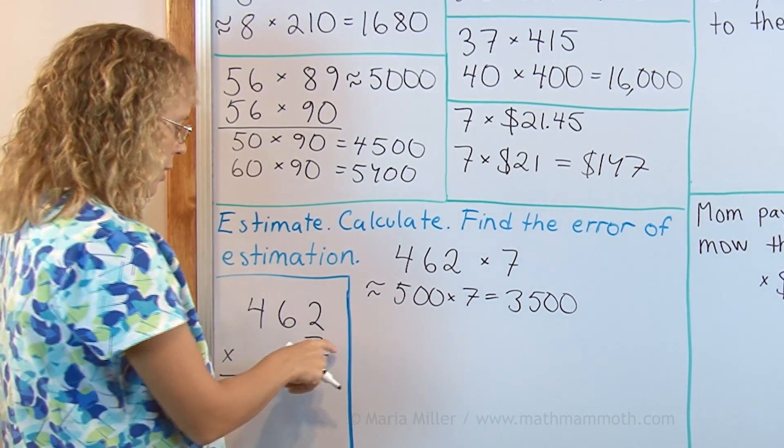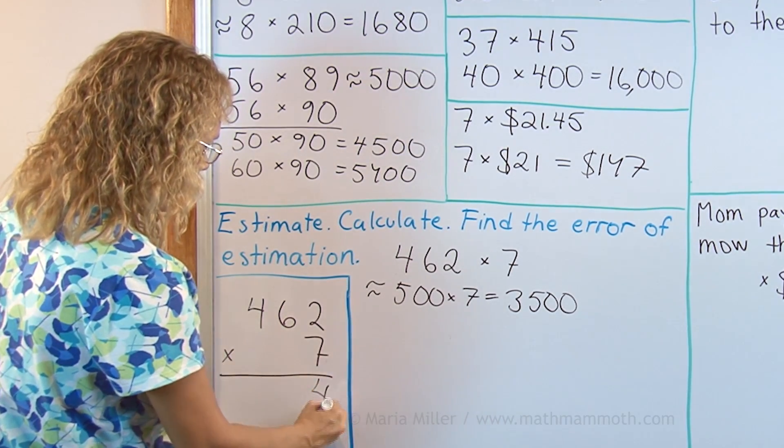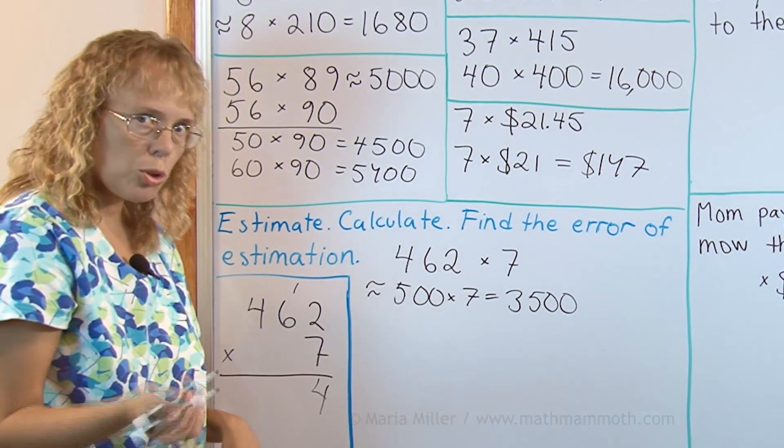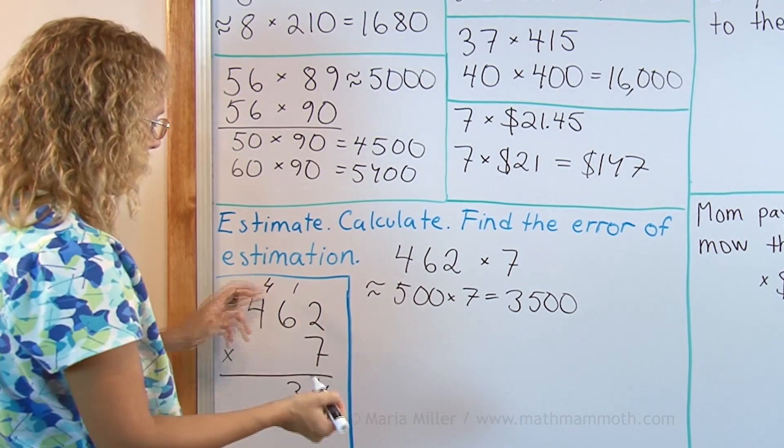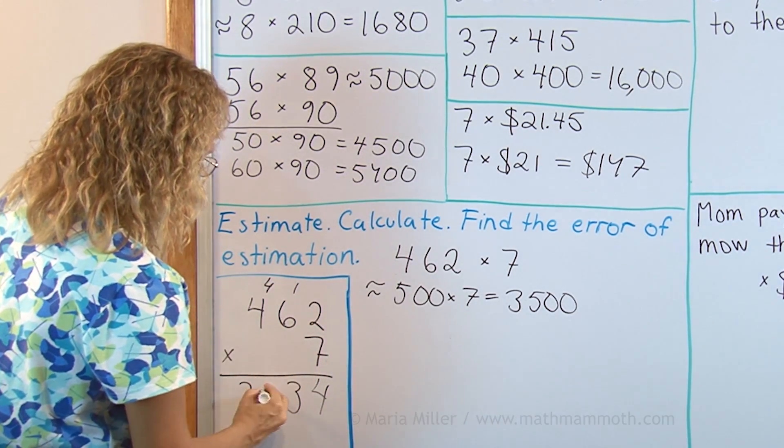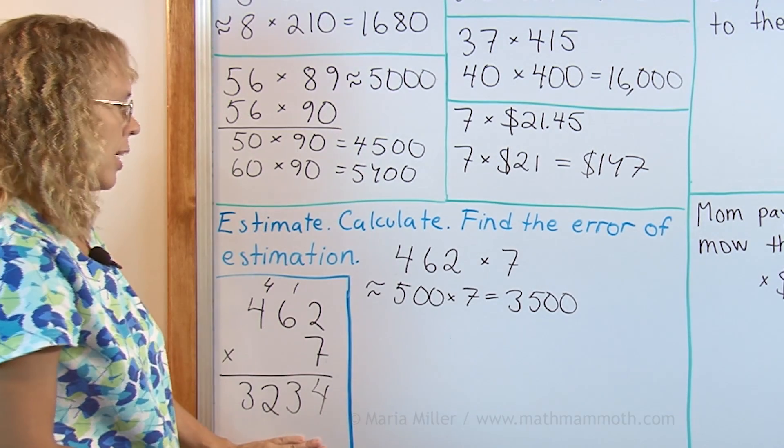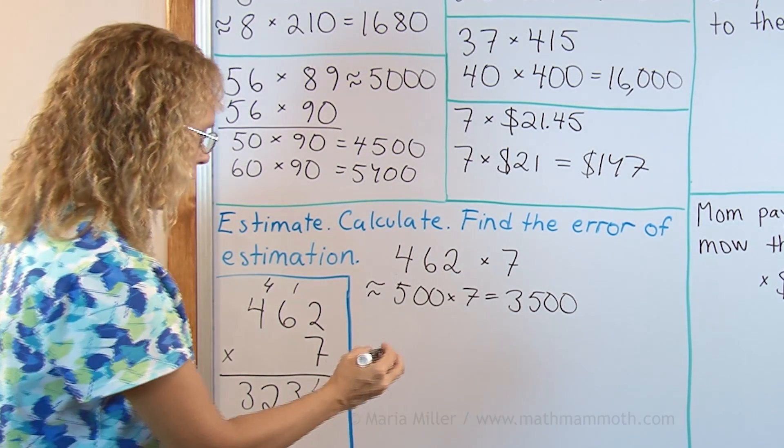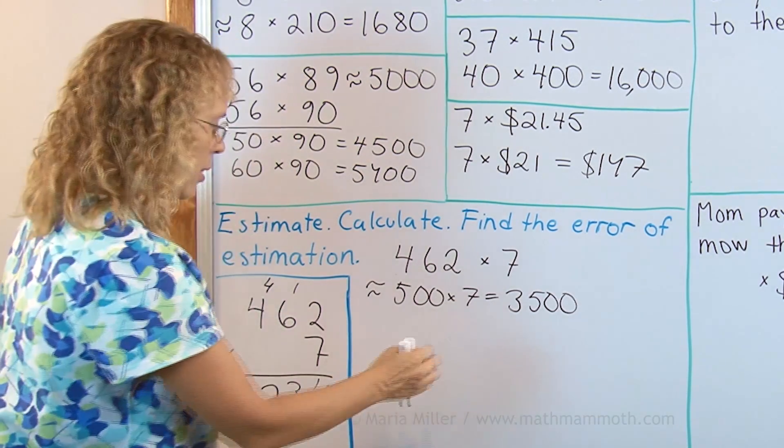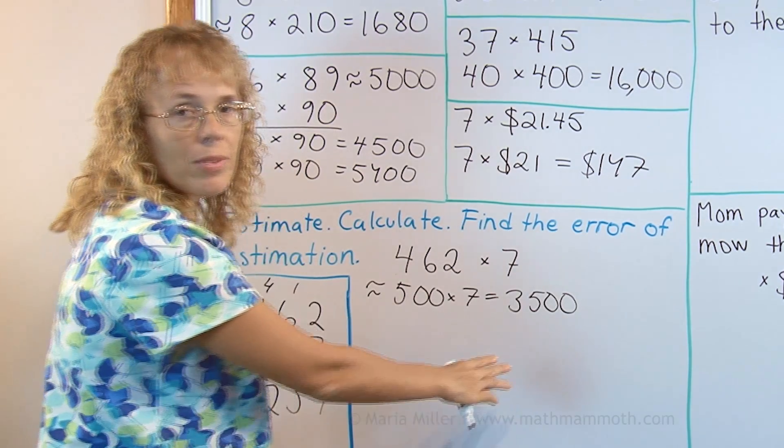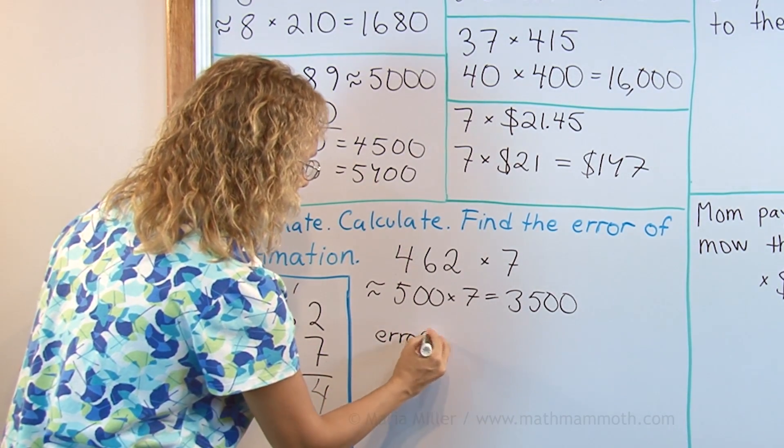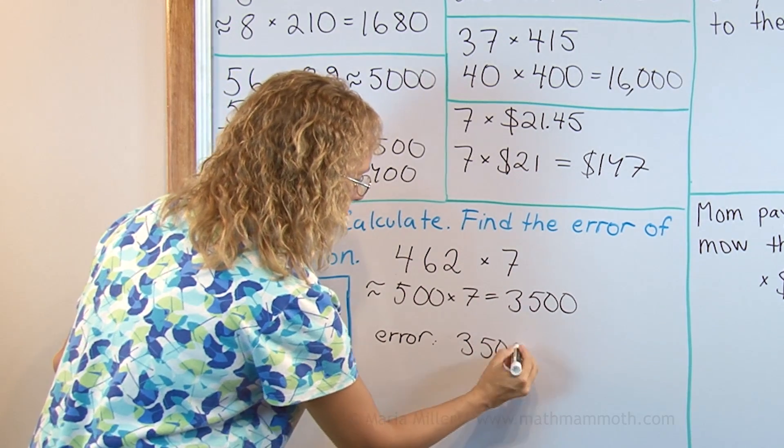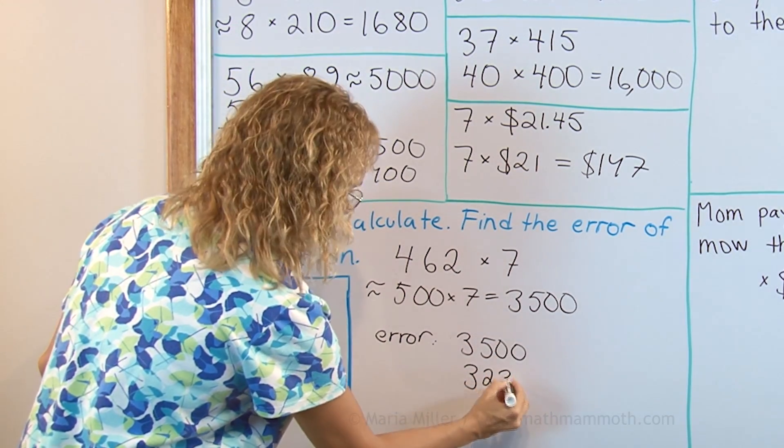My estimation would be I can simply round this up to the nearest 100 which is 500 here times 7 so I get 3500. And now I'll multiply exactly 7 times 2 is 14 and carry 1. 6 times 7, 42 plus 1 is 43. 4 times 7, 28 plus 4 is 32. The error of estimation we find by looking at the difference between these two and difference you know you subtract.